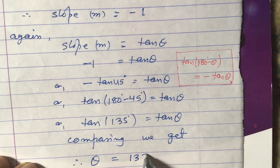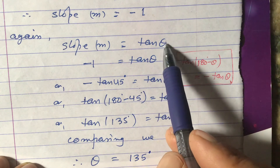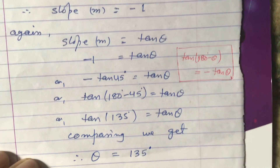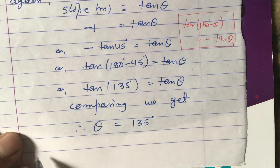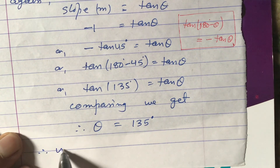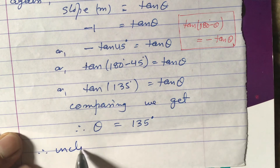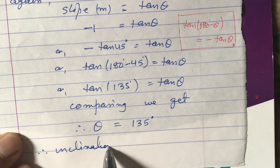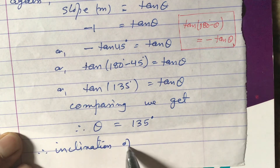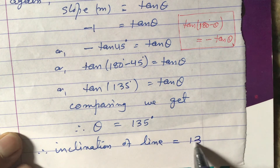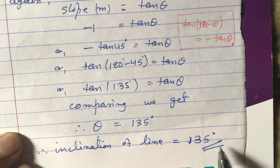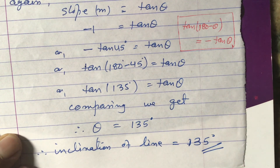Therefore, θ represents the inclination. So the inclination of the line is equal to 135°. This is your answer. Thank you for watching this video.